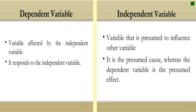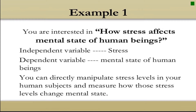The dependent variable also responds to the independent variable. To clarify: the independent variable is the presumed cause, and the dependent variable is the presumed effect. For example, you are interested in how stress affects the mental state of human beings. Stress is the cause and the mental state of human being is the effect. So the independent variable is stress and the dependent variable is the mental state of human beings. You can directly manipulate stress levels in your human subjects and measure how those stress levels change the mental state.